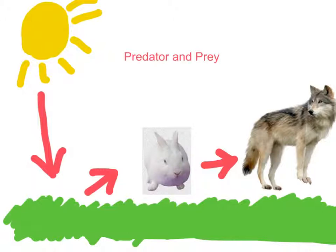Now, a rabbit is prey to a predator known as the wolf. The wolf will then eat the rabbit and it will get its energy from there and convert it into its own energy.